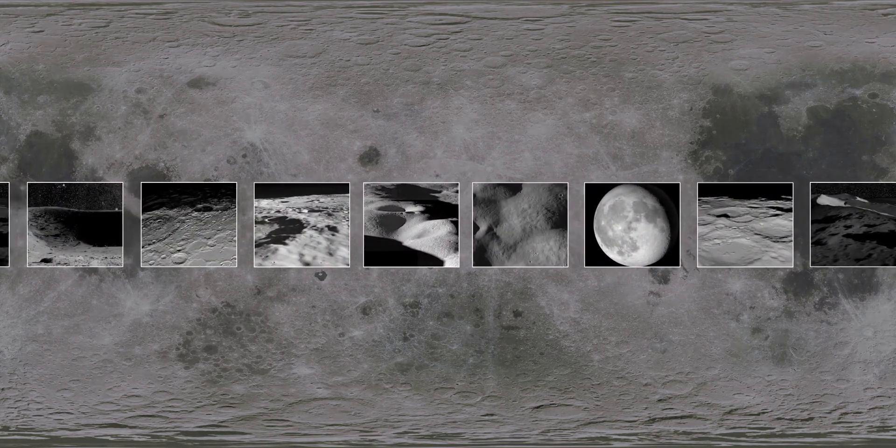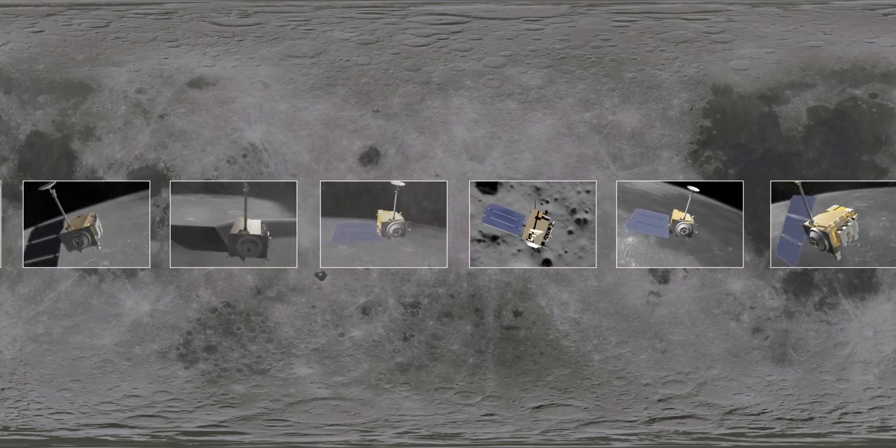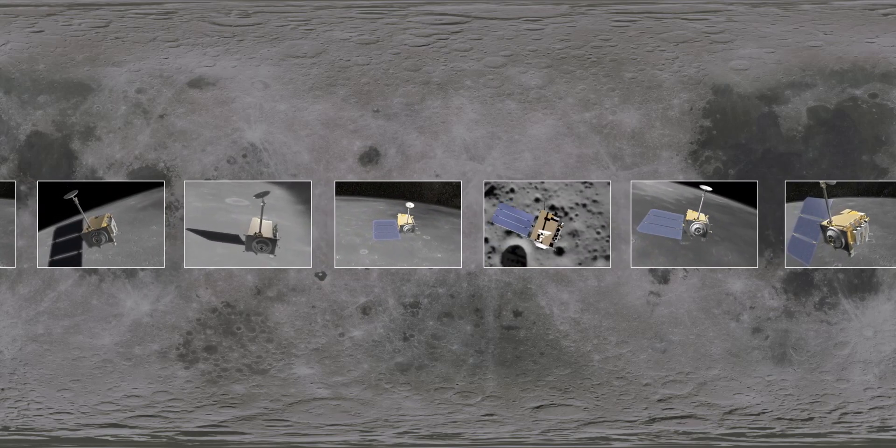From year to year, the Moon never seems to change. Craters and other formations appear to be permanent now, but the Moon didn't always look like this.